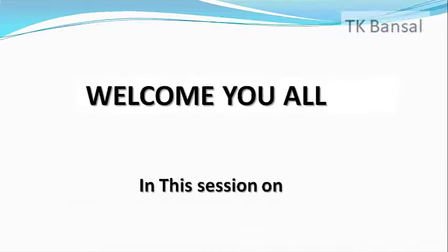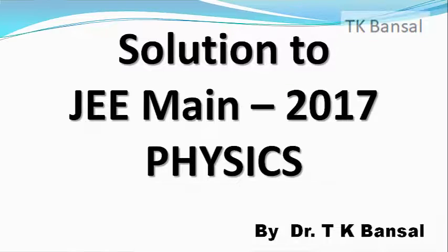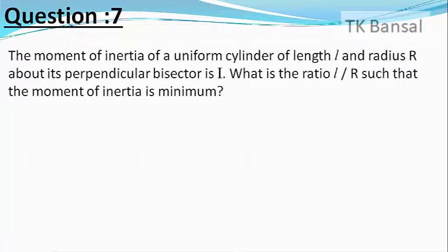Hello and welcome. Let's now go to our next question from JEE Mains 2017 Physics. The moment of inertia of a uniform cylinder of length l and radius r about its perpendicular bisector is i. What is the ratio l by r such that its moment of inertia is minimum? The choices are one, three by root two, whole root of three by two, and root three by two. It is a rather difficult question.